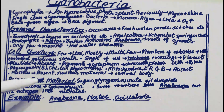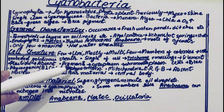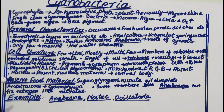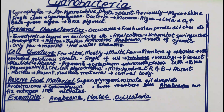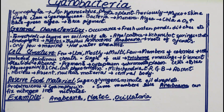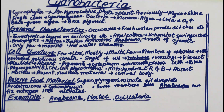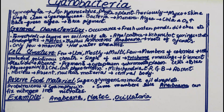Plastids are absent in cyanobacteria. Their pigments are not present in a chloroplast because, like bacterial species, they do not have membrane-bound organelles. Their pigments are instead present in the cytoplasm, which is also known as chromatoplasm — because the colored pigments are scattered throughout the cytoplasm.